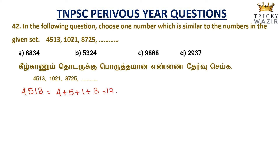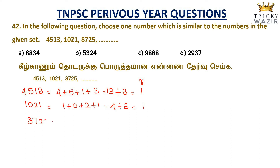For 4513: 4 plus 5 plus 1 plus 3 equals 13; 13 divided by 3 gives remainder 1. For 1021: 1 plus 0 plus 2 plus 1 equals 4; 4 divided by 3 gives remainder 1. For 8725: 8 plus 7 plus 2 plus 5 equals 22; 22 divided by 3 gives remainder 1.